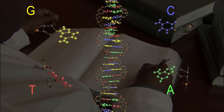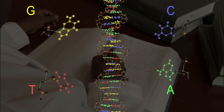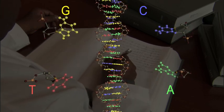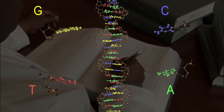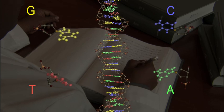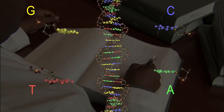There are two of these base molecules for each step on the ladder, and it is always either A and T together, or G and C together. So if you know one side of the step on the ladder, you automatically know the other side as well.